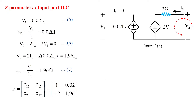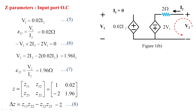To find h parameters, we use the standard formula to obtain h parameters in terms of z parameters. First, the determinant delta_z = z11·z22 minus z21·z12 = 1×1.96 minus (minus 2)×0.02 = 1.96 + 0.04 = 2. So delta_z = 2, framed as equation 8.